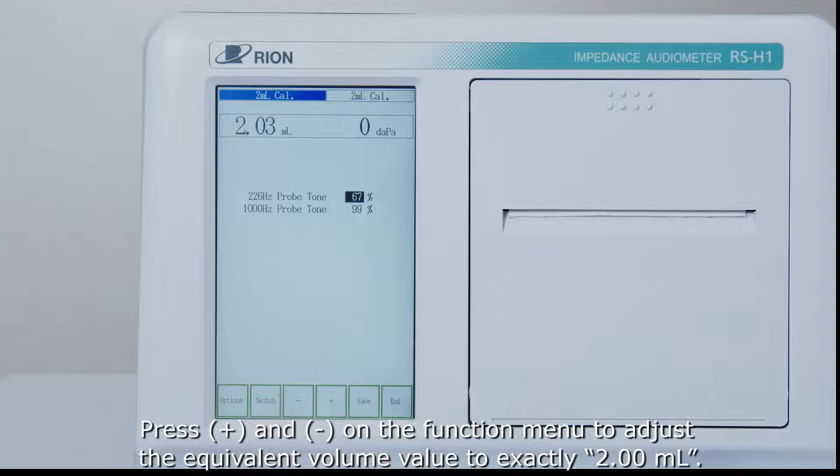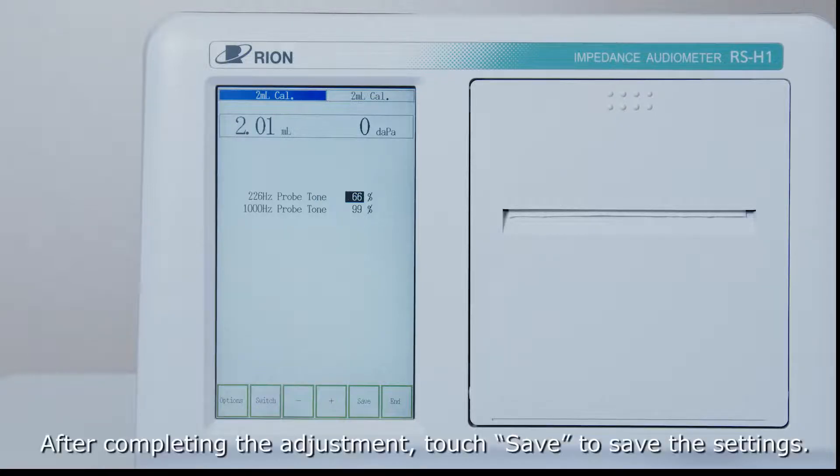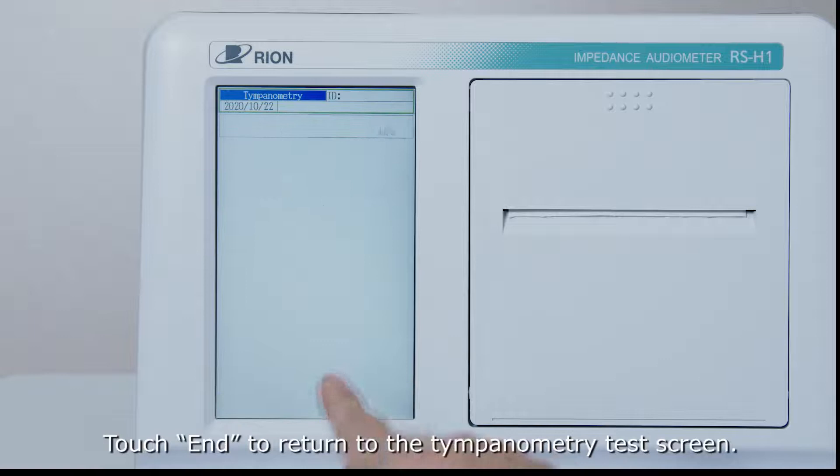Press plus and minus on the function menu to adjust the equivalent volume value to exactly 2ml. After completing the adjustment, touch save to save the settings. Touch end to return to the tympanometry test screen.